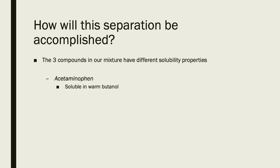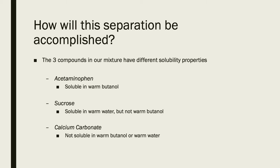For our particular experiment, the three different compounds in our mixture are going to be acetaminophen, sucrose, and calcium carbonate. Don't worry too much about these names or the chemical formulas — it's not something we'd expect you to know at this point in general chemistry, outside of calcium carbonate, which you should probably know how to name based on naming conventions you've been covering in lecture. What's important is that all three compounds have different solubility trends. Acetaminophen, for instance, is soluble in warm butanol, or 1-butanol as labeled in the lab.